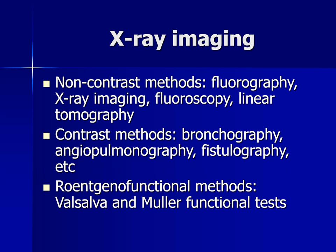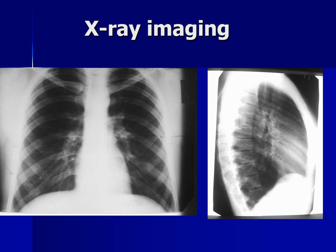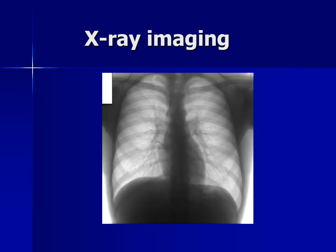Roentgenofunctional methods are Valsalva and Müller functional tests. This slide demonstrates x-ray imaging in negative view. When the bones are in white color, it means it is negative. When the bones are black, it is positive. We see an x-ray of the chest in a direct view and also an x-ray of the chest in lateral view. In the positive view, the bones are black and gas is white.